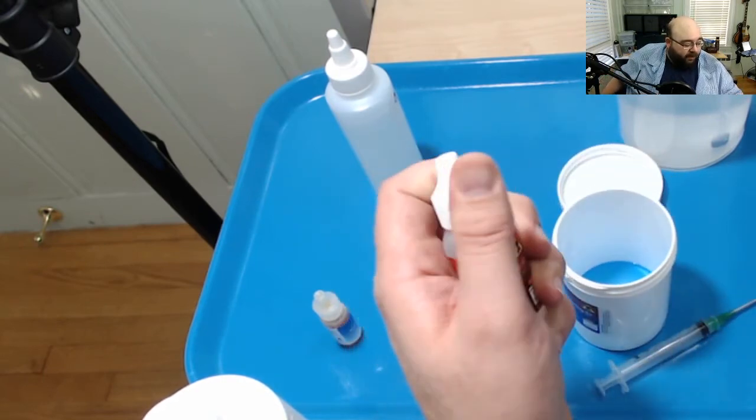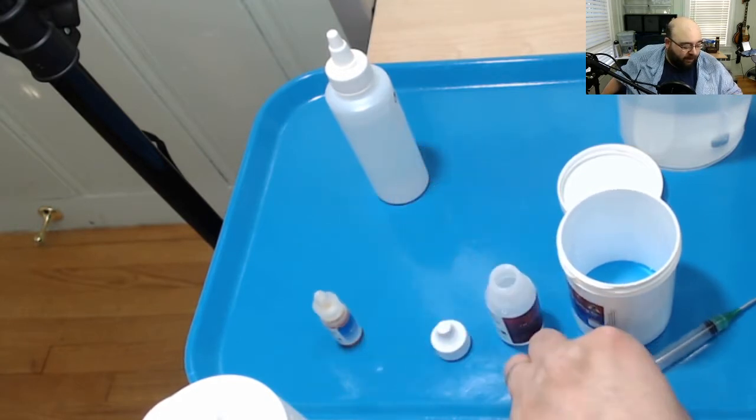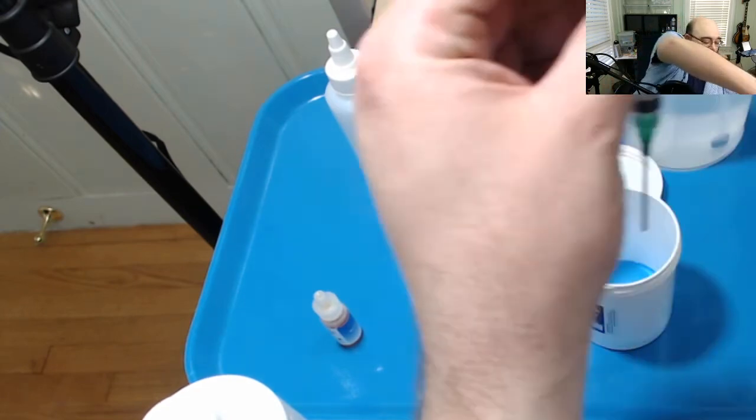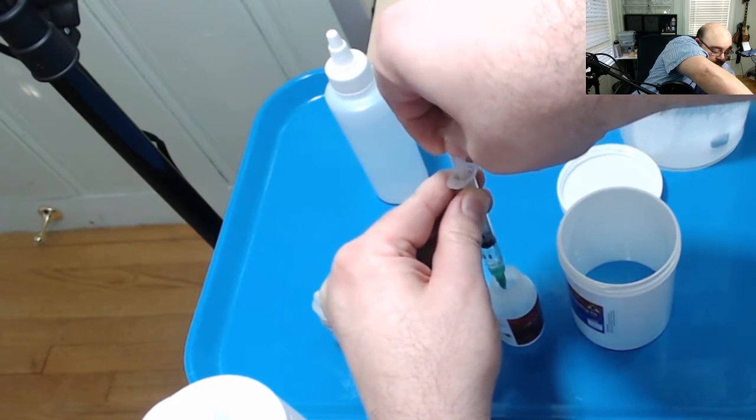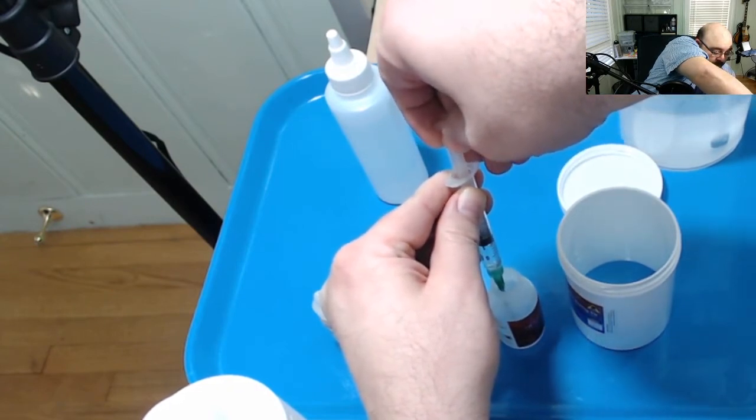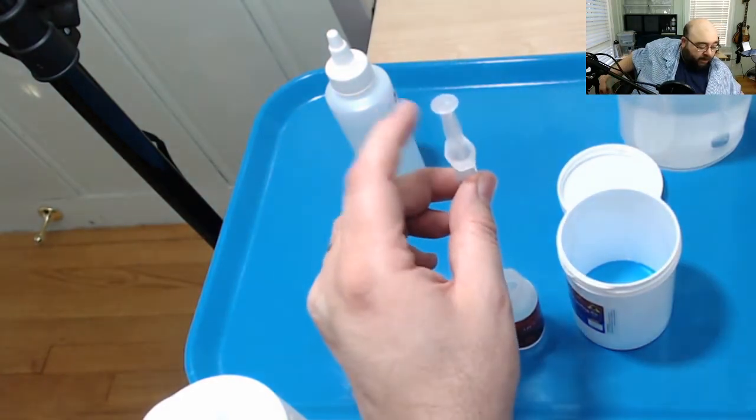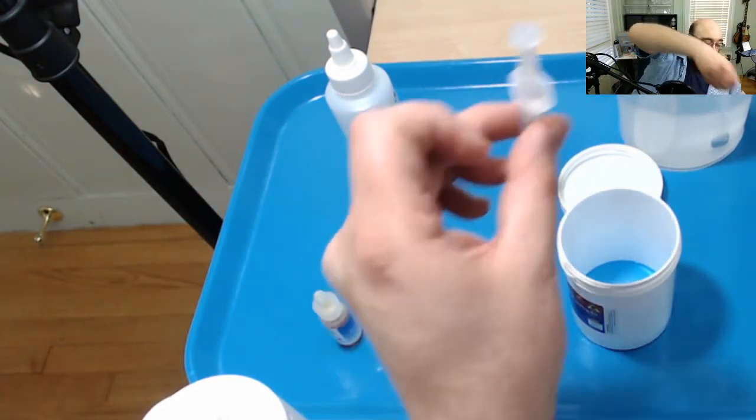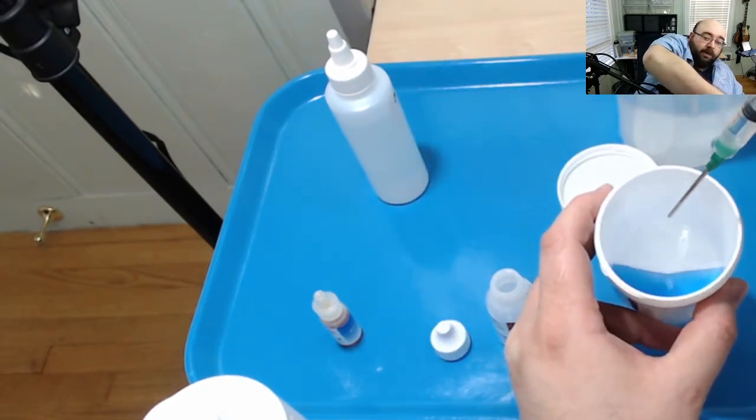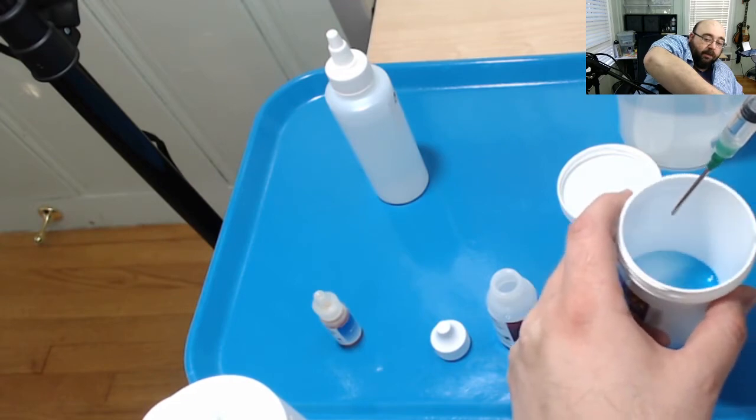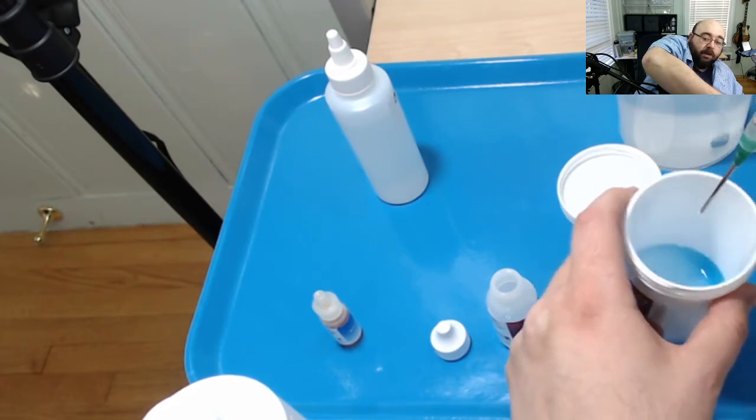So I'm going to take out the acid. Probably shouldn't be handling this with one hand, but I'm doing a video. And I'm going to draw out about one mil. And we want it to be exactly one mil. And then what we're going to do is drip it into here slowly while mixing it. So you can see it's still blue. Still blue.